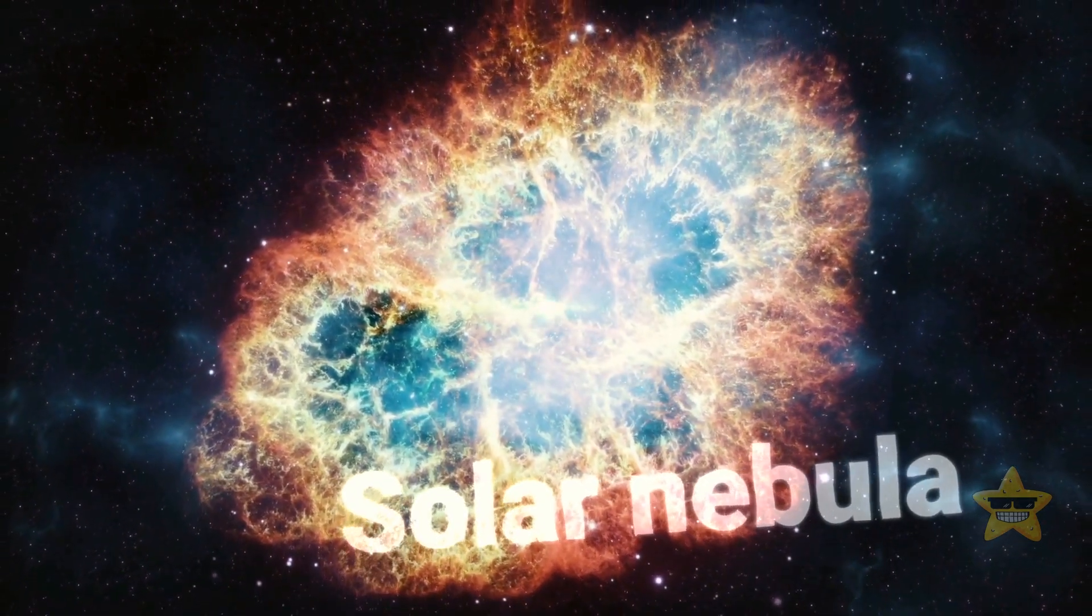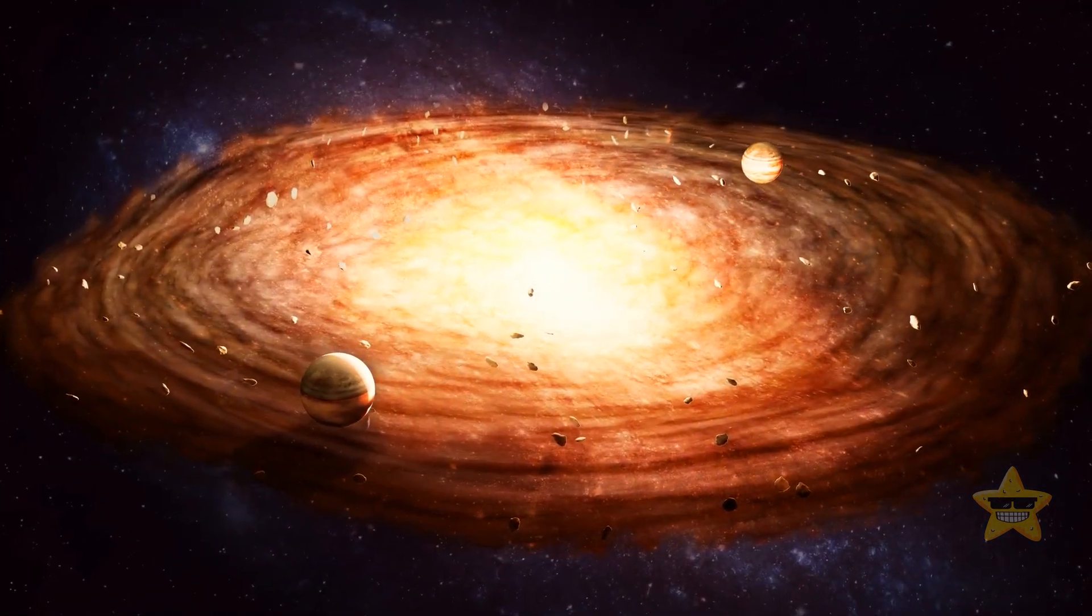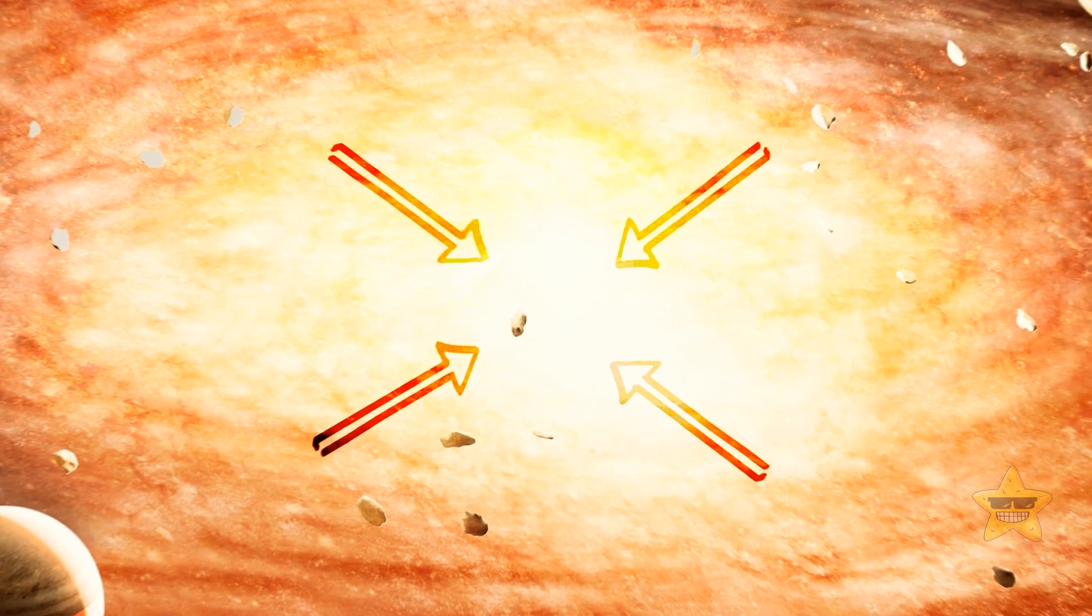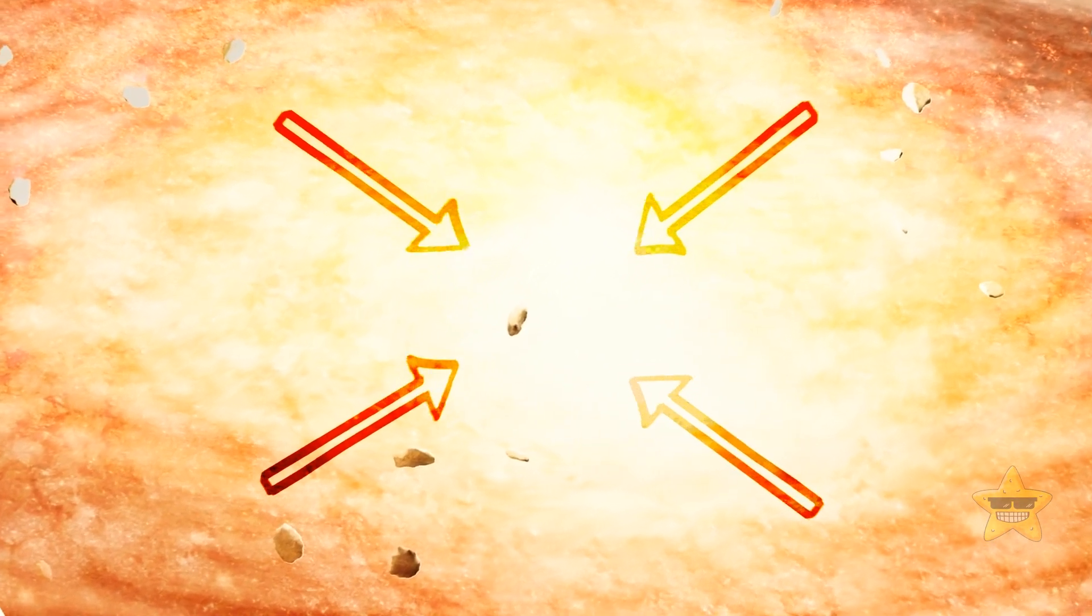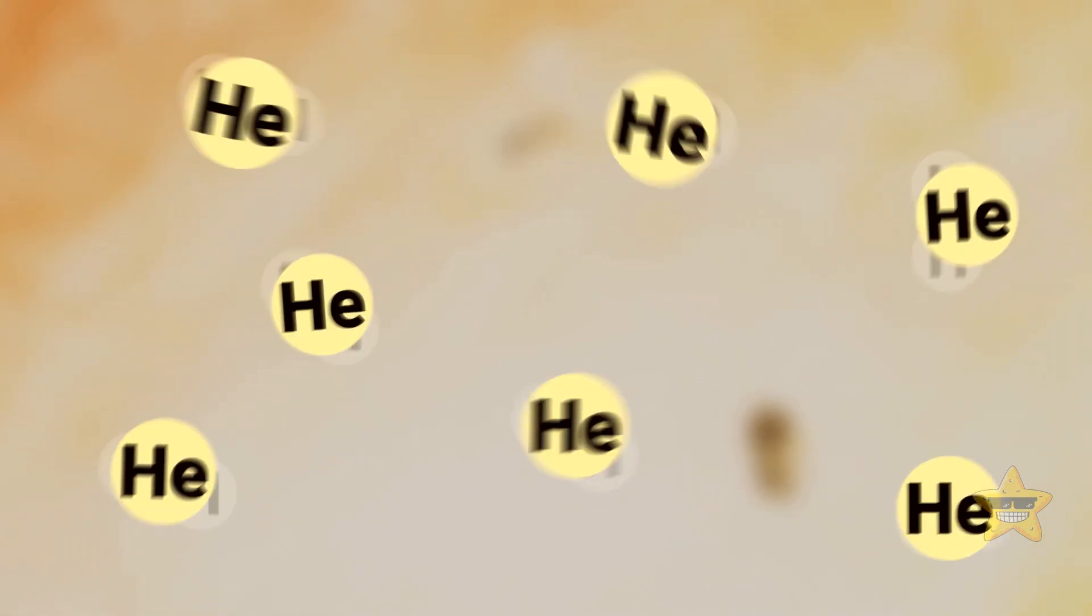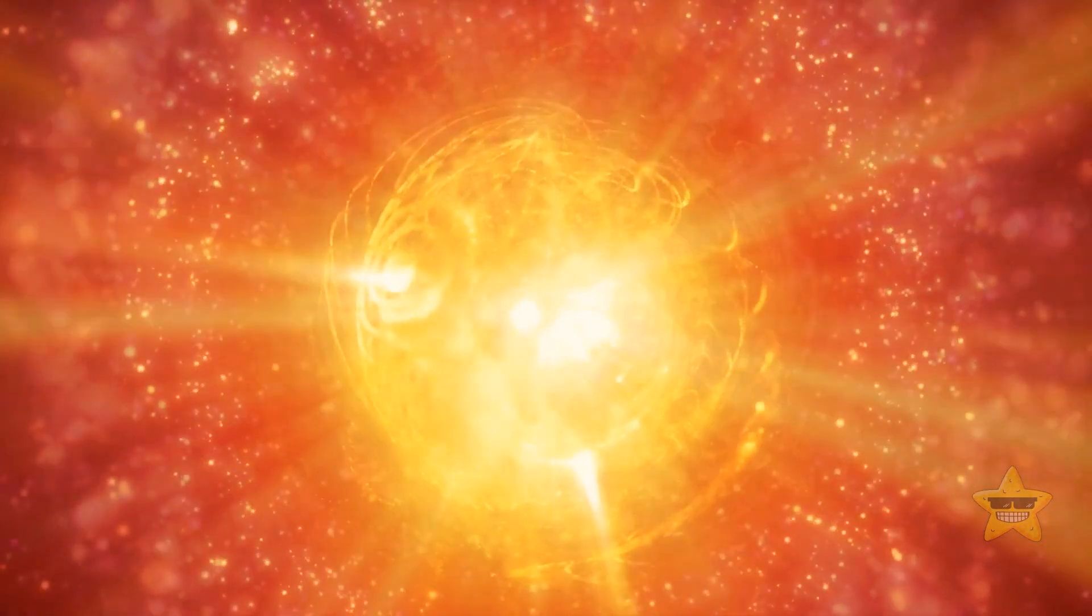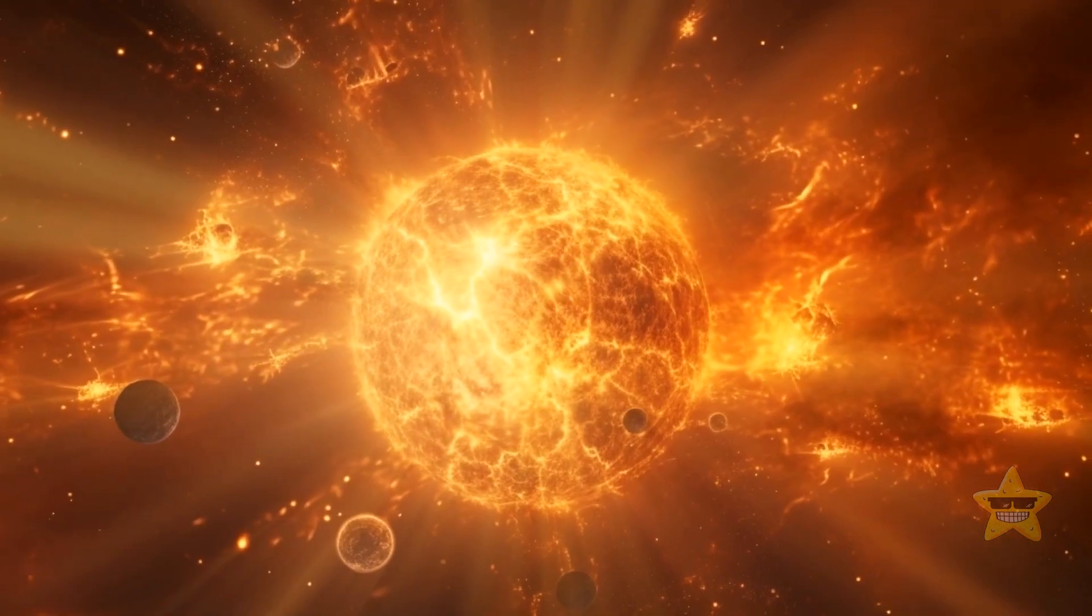This left us with a solar nebula, a disk of material that kept spinning. At its center, gravitational forces kept pulling more and more material in. At one moment, the pressure at the core became so great that hydrogen atoms started to mix and form helium. Like it happens with other processes in space, this released giant amounts of energy. And ta-da, we got our star.